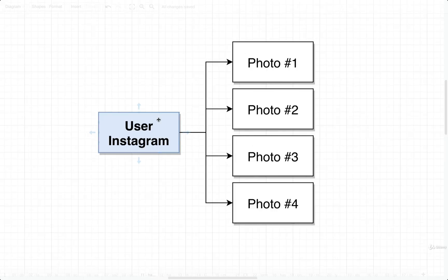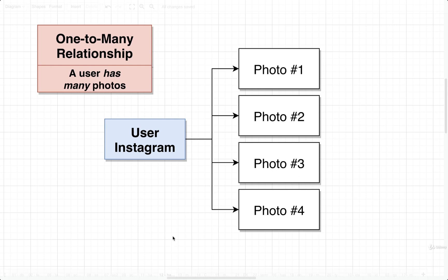In this diagram we've got a user called Instagram on the left-hand side, and this user owns many different photos — this user is somehow tied to these photos. We would refer to this kind of relationship as a one-to-many relationship. This is the first kind of relationship that we're going to look at out of four different kinds, so this is relationship type number one: a one-to-many relationship.